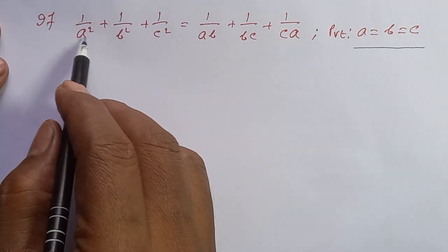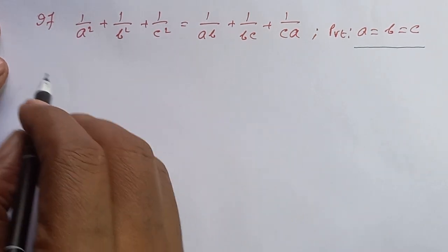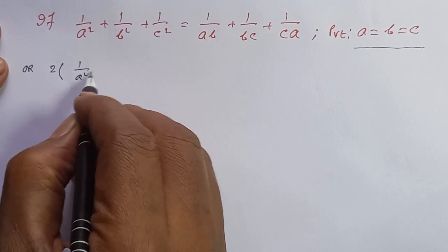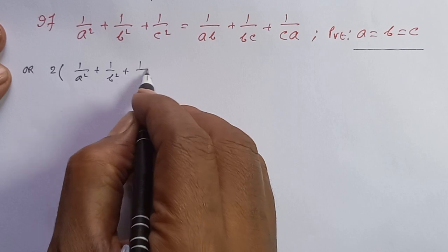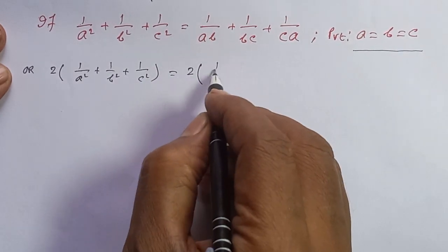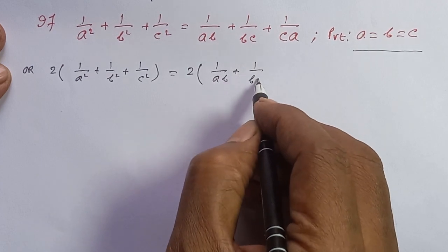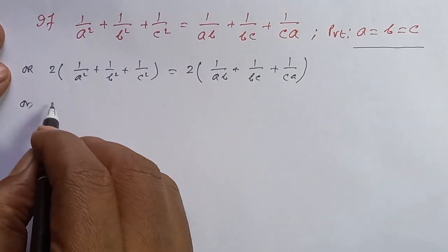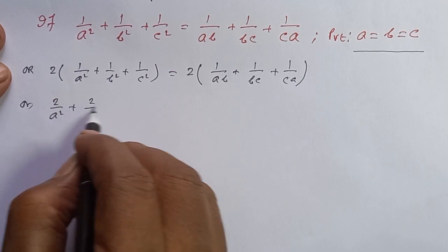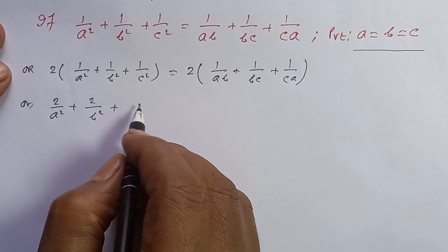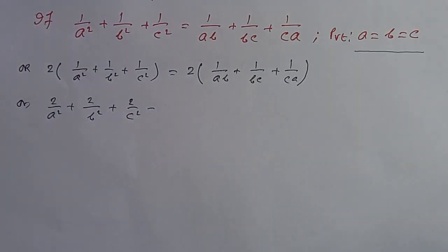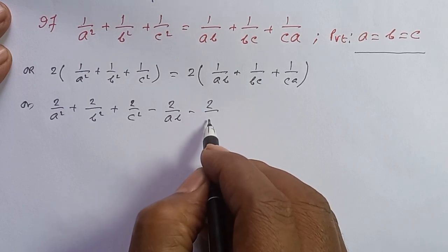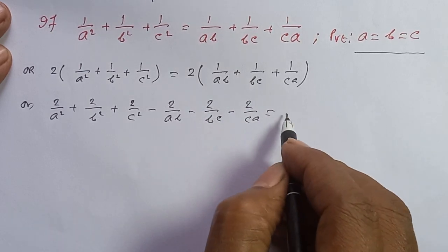We will multiply both sides by 2. So 2 by a square plus 2 by b square plus 2 by c square minus 2 by ab minus 2 by bc minus 2 by ca equals 0.